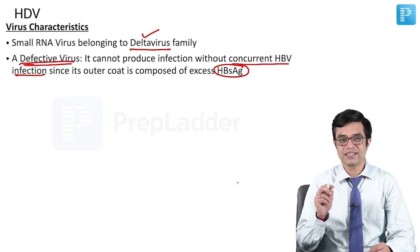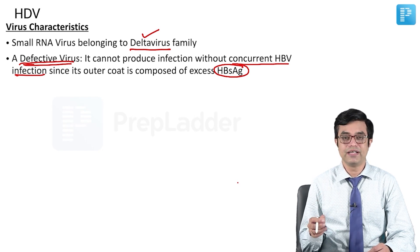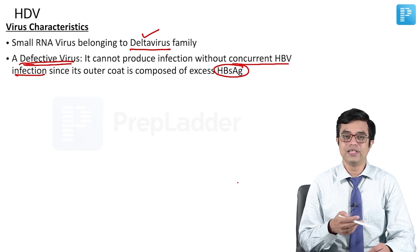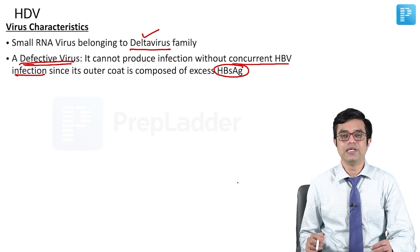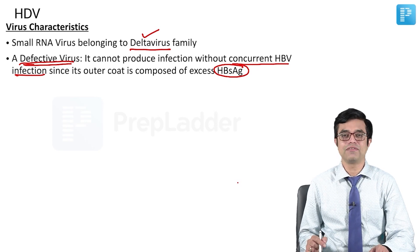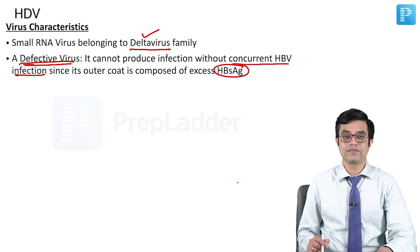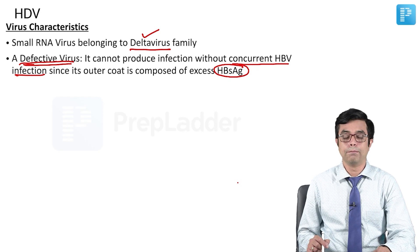Only when HBsAg is present — that is, when hepatitis B virus infection is there and it is replicating — then only HDV will be able to produce infection. By itself, it is a dangerous virus but by itself, it is unable to do any damage.